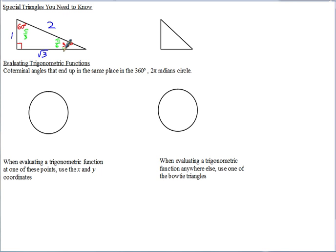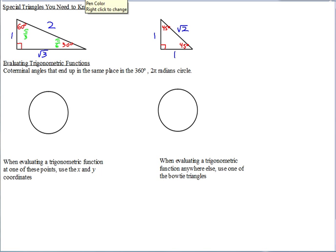The other special triangle you need to know is the 45-45-90. This one's even easier — both angles are 45 degrees, the legs are both one, and the hypotenuse is root two. If you memorize those two special triangles, that'll make it much easier to handle trig problems without a calculator. And 45 degrees is the same as pi over 4.